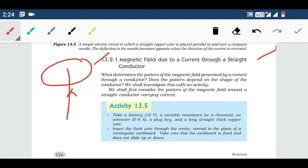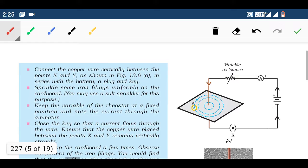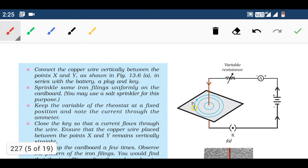In this particular topic, we are going to study what happens if we have a straight conductor and current passes through it. For this experiment, we need to make a circuit, and you know the circuit very well from our electricity chapter.